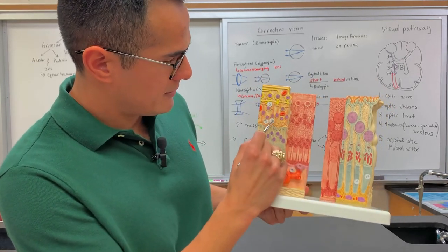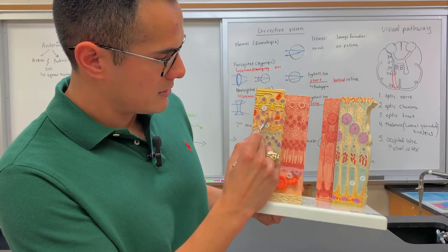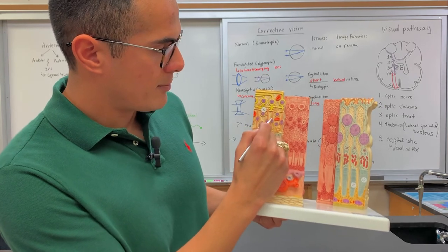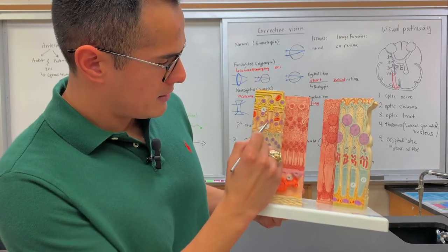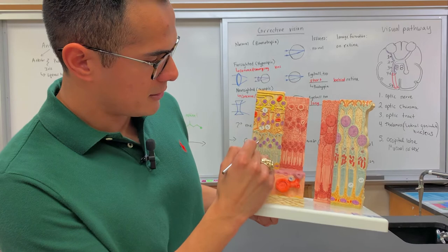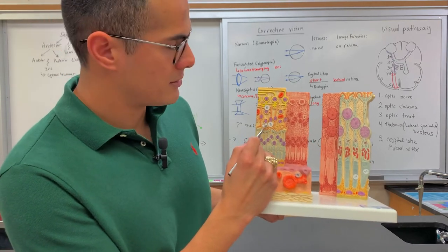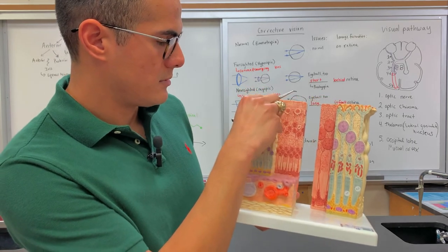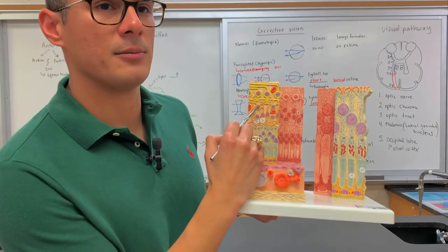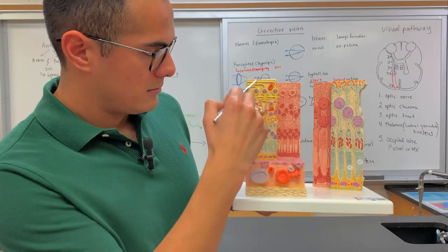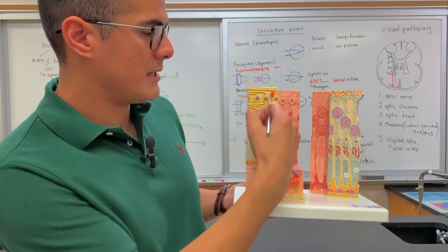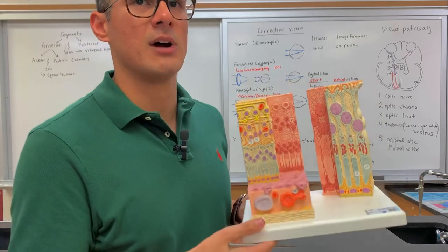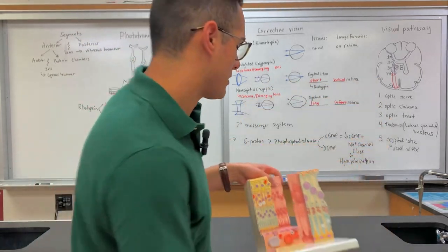These here are the bipolar cells — you can see both of the different projections coming off. The ones closer toward the rods and cones are the horizontal cells. And the ones up here — this is what's known as the amacrine cell. We activate these different rods and cones, the signal gets sent to the optic nerve, and the question is: what actually happens within the rods and the cones?